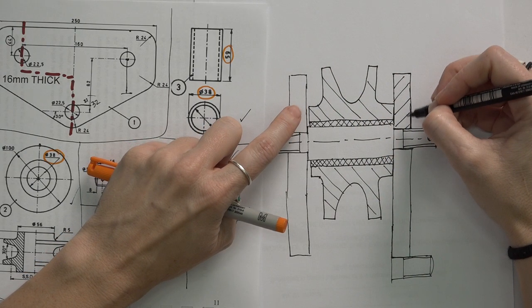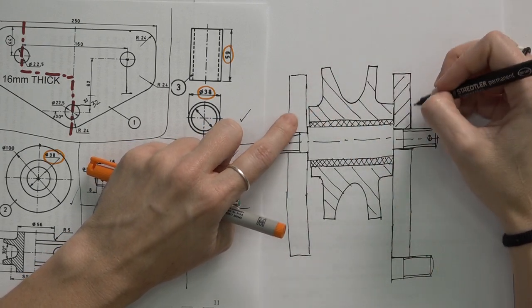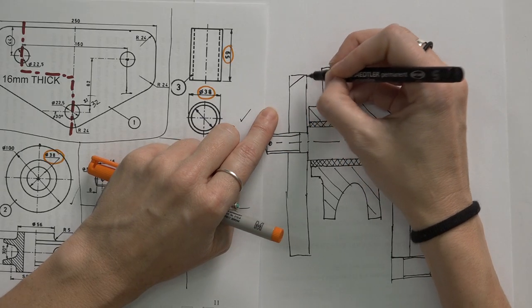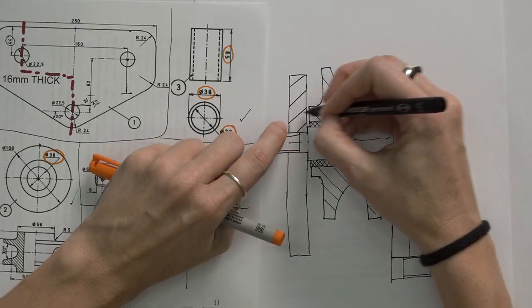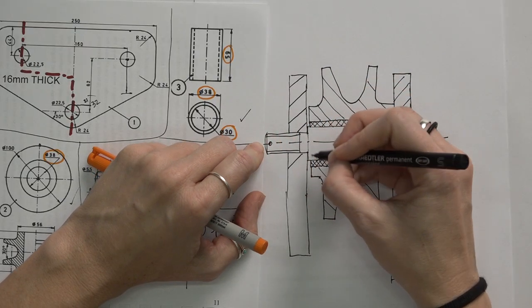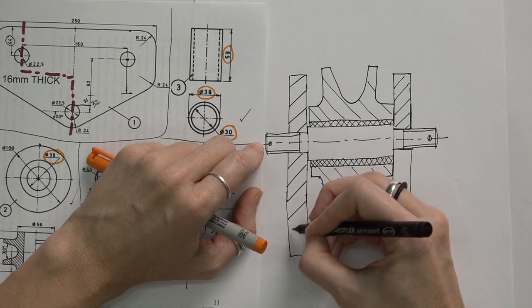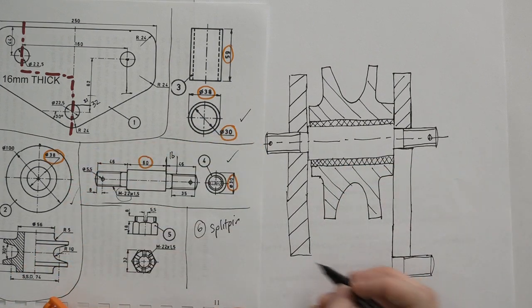Okay, and remember, these two components are two different components. So you can hatch them differently or you can hatch them the same because they're not right next to each other. But when there are two components right next to each other, you want the hatching to be different, ideally. Okay, so that is that part.